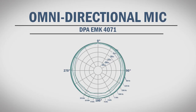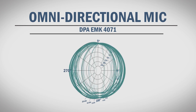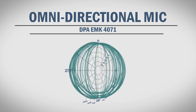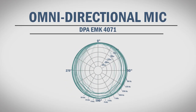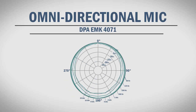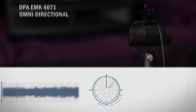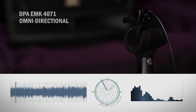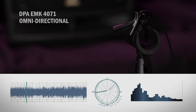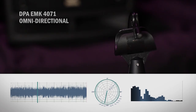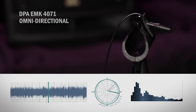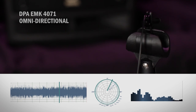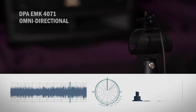This is the polar pattern for the DPA EMK 4071, which is an omnidirectional lavalier microphone. You can see that while the response does vary a bit depending on the frequency, it is still very sensitive to sound coming from all directions. In this setup, we're starting with the mic diaphragm facing directly toward our speaker. Now let's turn the microphone 360 degrees. You can hear that there was little to no fall off as the mic direction changed.